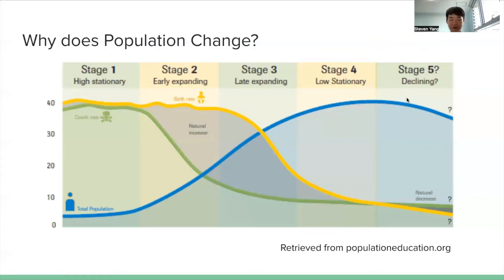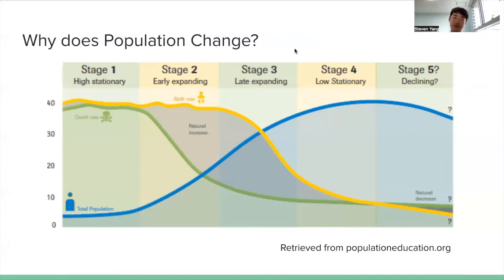Stage five is the declining period when the population starts to decline as the birth rate is lower than the death rate. The demographic transition model gives you an overview of how population changes as a country develops economically.